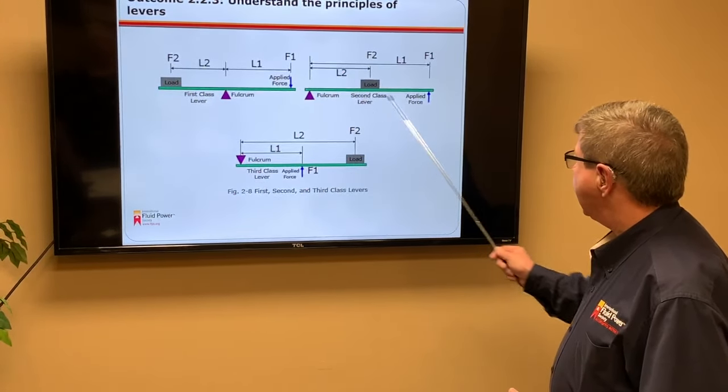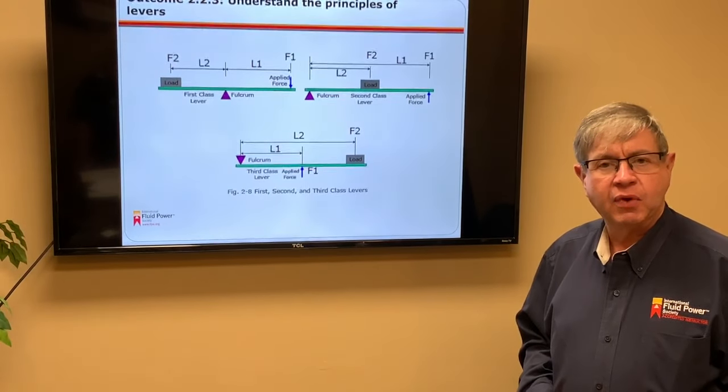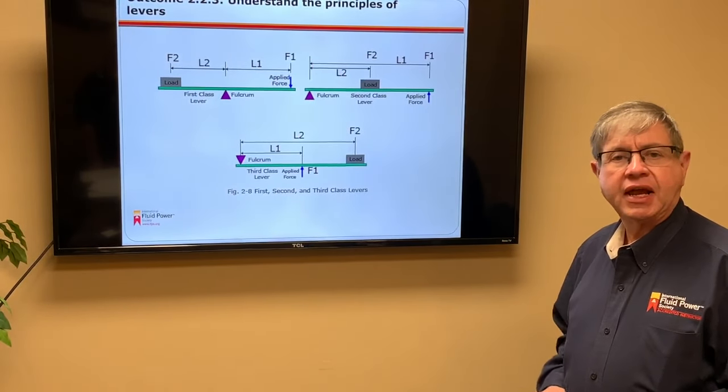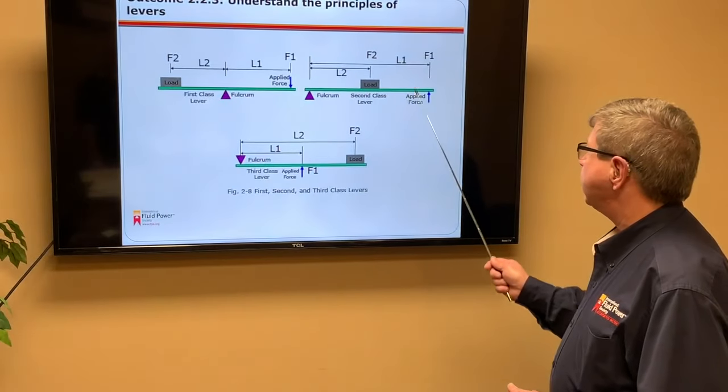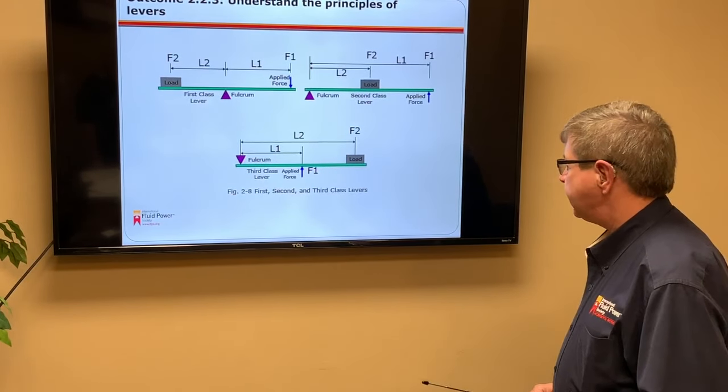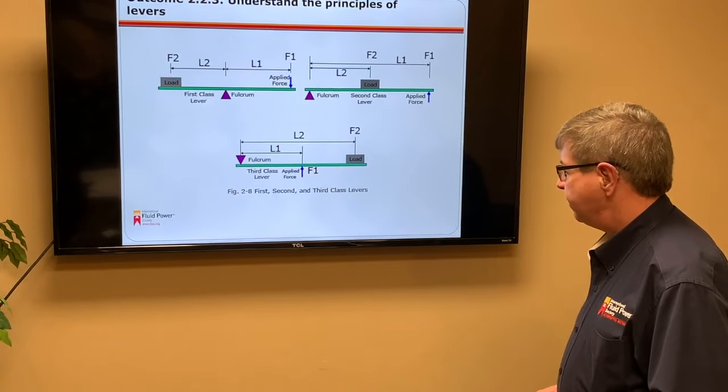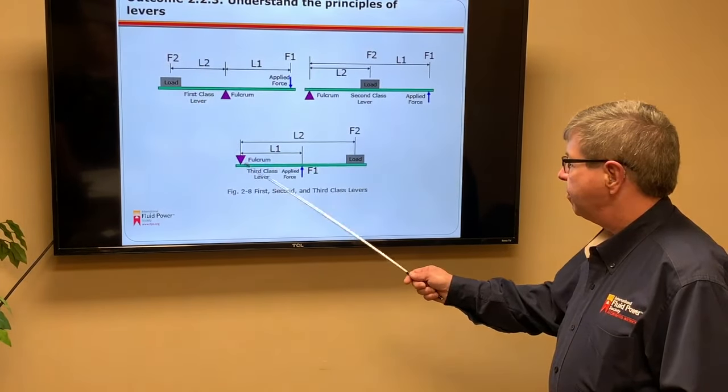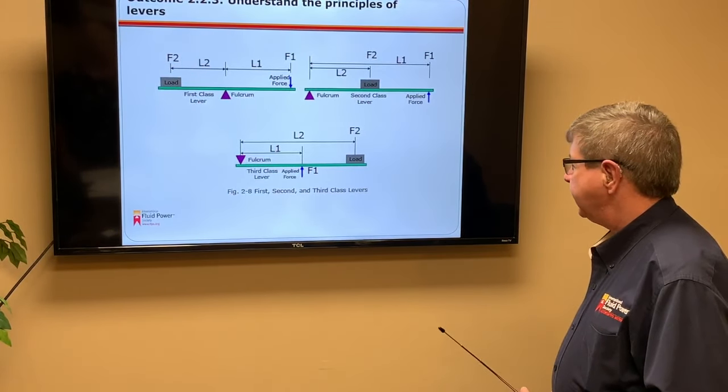As you can see from the analogy here, why it is nicknamed the wheelbarrow effect, which is exactly what you do with a wheelbarrow as you apply a second class lever. The last class is known as the third class. And again, we have a fulcrum point, and the difference is here though,